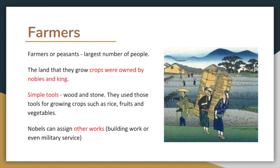Farmers. Farmers or peasants were the class with the largest number of people. The land they grew crops on was owned by nobles and the king. The crops that were left were given to farmers to feed their families. The peasant class used simple tools such as wood and stone to grow crops such as rice, fruits, and vegetables. Nobles could assign other work rather than farming for peasants, such as building work or even military service.